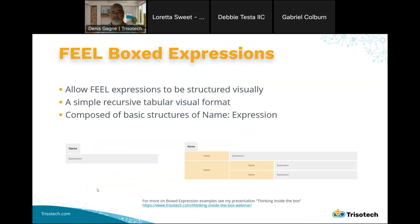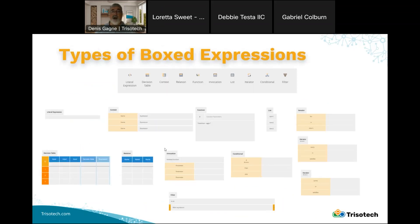To give a bit more detail, here's what box expressions are. It's a basic recursive construct of a name and an expression. We have a literal with a name and its expression, and we can build up a structure where a name's expression is itself built up of two names with their own sub-expressions — a recursive pattern. We have different types of box expressions, and I invite you to get acquainted with DMN and see the full expressiveness of the language.